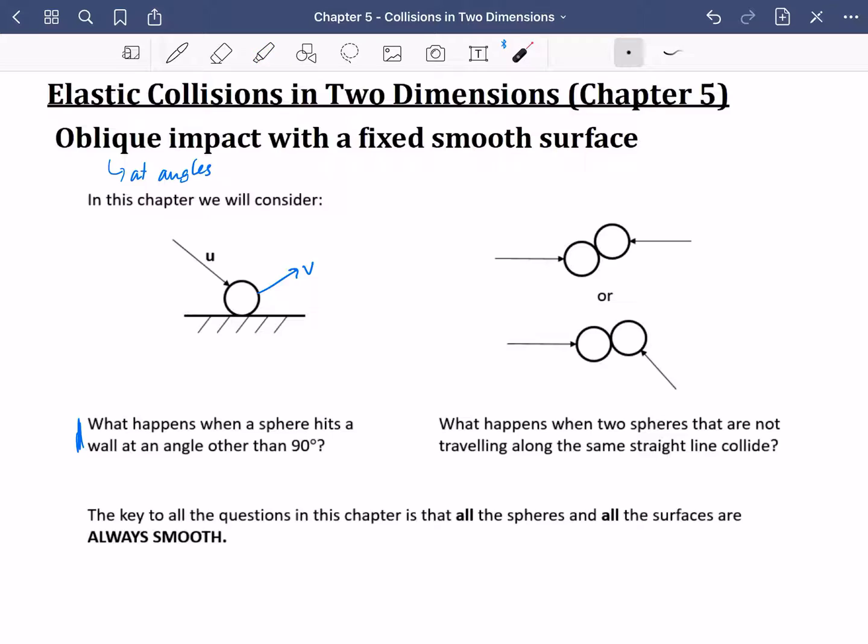We're then going to look at these couple of diagrams that we've got over here, where maybe we've got two balls that are hitting into each other, and they touch along just one point like this. Or you might have them where they're not coming at the same angle to begin with. One might be coming in like this, another one might be coming in like this, and what we're going to try and do is predict how are these balls going to move afterwards after they've had a collision. So what happens when two spheres that are not travelling along the same straight line collide.